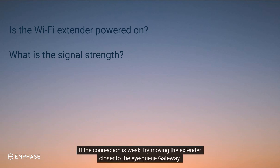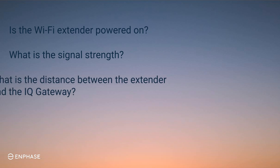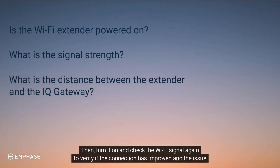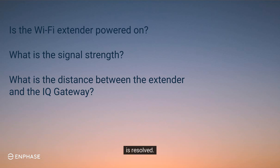If the connection is weak, try moving the extender closer to the IQ gateway. Then turn it on and check the Wi-Fi signal again to verify if the connection has improved and the issue is resolved.